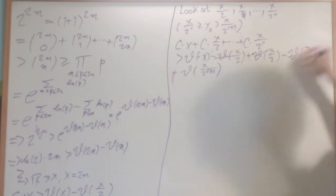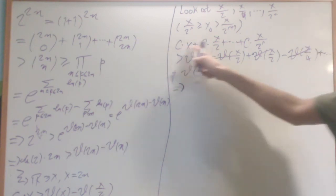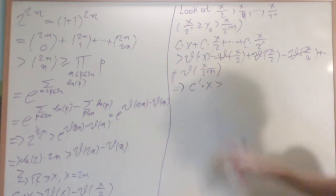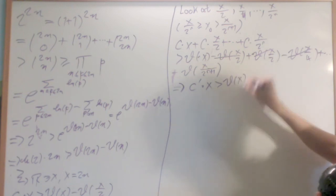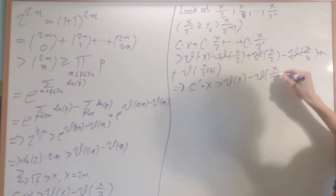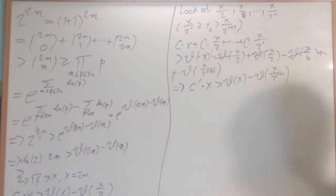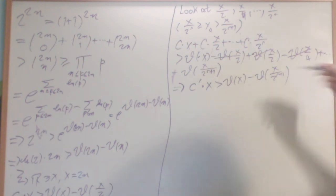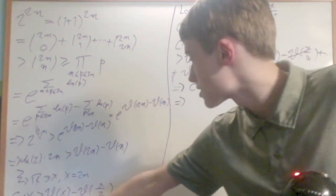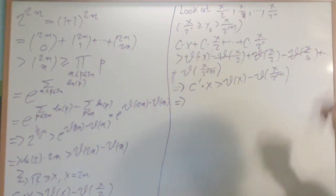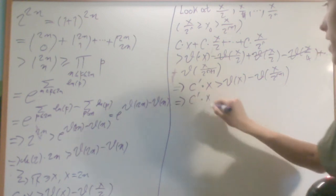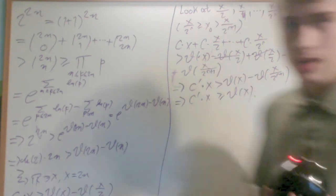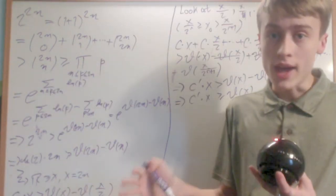The telescoping sum on the right collapses to theta(x) − theta(x/2^(r+1)). The left side is a geometric sum, which equals some constant c' times x. Since x/2^(r+1) < x₀, the term theta(x/2^(r+1)) doesn't affect the inequality. By simple manipulation, c'*x ≥ theta(x), which shows that theta(x) = O(x).